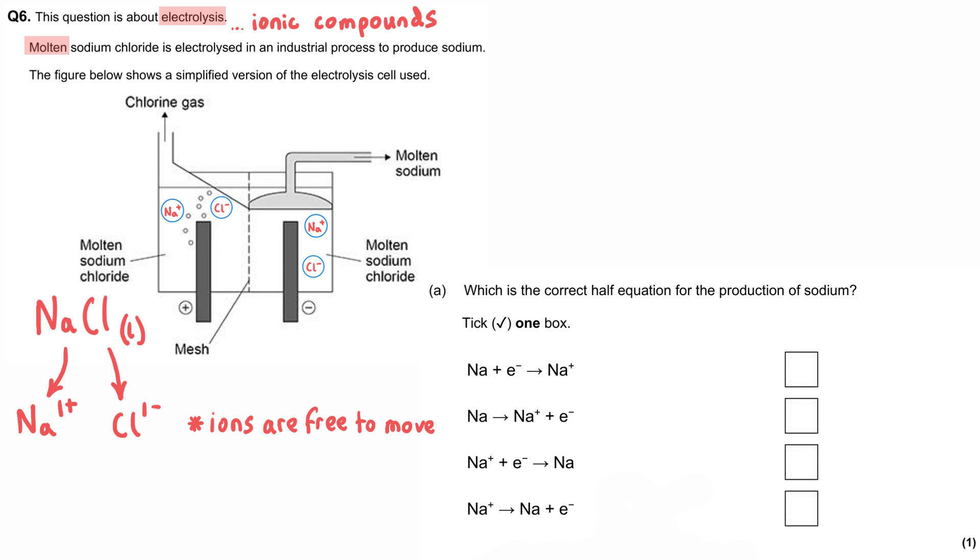We can see that there are positive and negative electrodes in these positions, and the molten sodium is piped off at the top here and chlorine gas on the left hand side. We've been asked which is the correct half equation for the production of sodium.